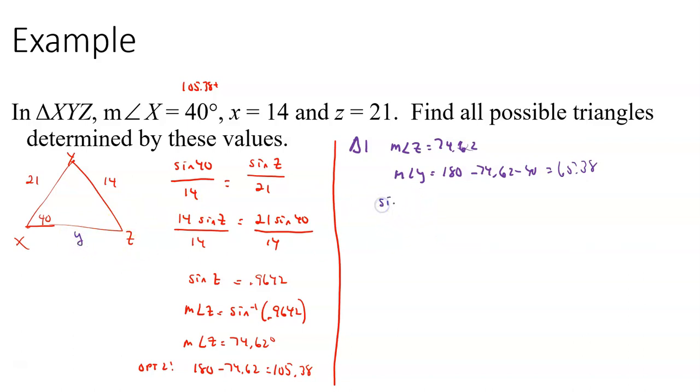Well, let's set up a law of sines. Sine of 40 over 14 equals the sine of Y, which is 65.38 over Y. Let's multiply 14 times the sine of 65.38. And now divide it by the sine of 40. So I'm just going to type it into my calculator as the sine of 40 and I get 19.8. Actually 19.80. So that's triangle number one. Angle Z measure, angle Y measure, side Y.